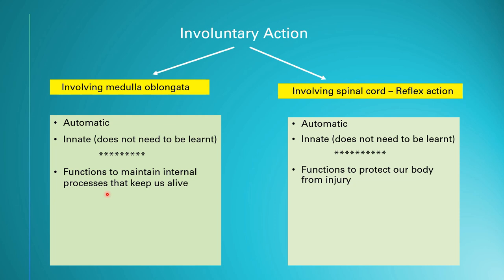Involuntary actions involving the medulla oblongata occur without an external stimulus — you do not need anything to start your heartbeat or your breathing. But for reflex action, you need a stimulus to trigger the response. For example, when you accidentally touch something hot, that hot object is the external stimulus that causes your hand to pull back. This is the third difference between these two types.